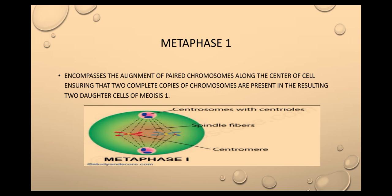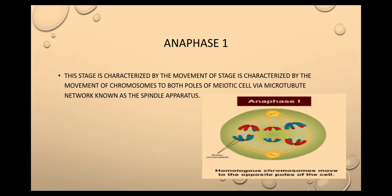Second, metaphase one encompasses the alignment of paired chromosomes along the center of the cell, ensuring that two complete copies of chromosomes are present in the resulting two daughter cells of meiosis one. Third, anaphase one is characterized by the movement of chromosomes to both poles of the meiotic cell via a microtubule network known as the spindle apparatus.